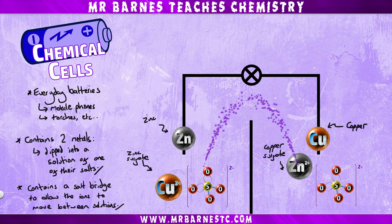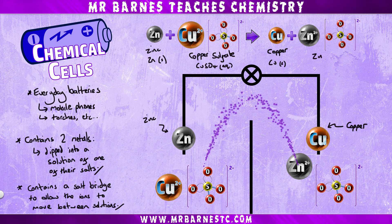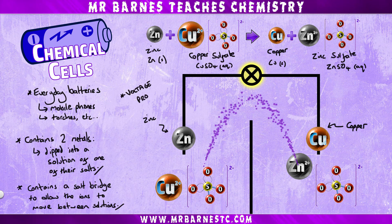If we use the reaction between zinc and copper sulfate as an example, zinc will react with the copper sulfate to form zinc sulfate and copper. When this happens, the ions move and that helps to produce a voltage, as you can see from when the bulb turns on.